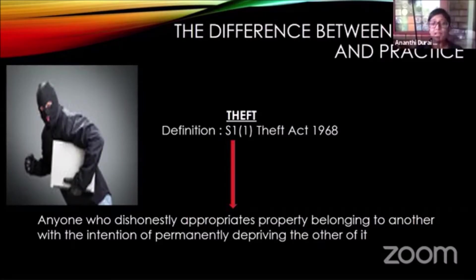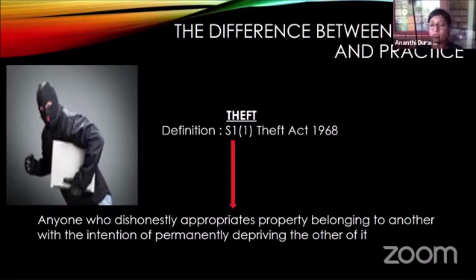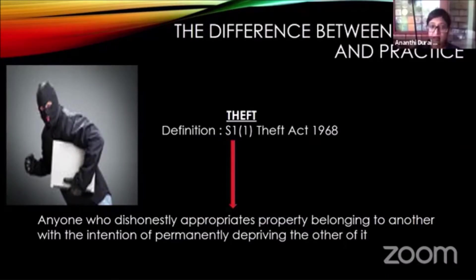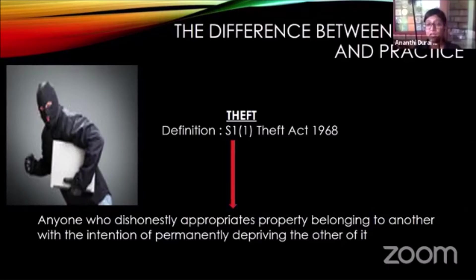The offence I'm going to look at is theft, which is also part of your syllabus — you'll be studying this later in the day. Theft is defined by section 1, subsection 1 of the Theft Act 1968. Criminal offences in the UK are mainly found in Acts of Parliament like this. The Theft Act determines the offence of theft; the Criminal Damage Act determines offences of damaging property; the Offences Against the Person Act deals with causing harm.